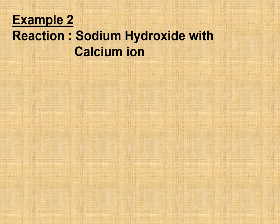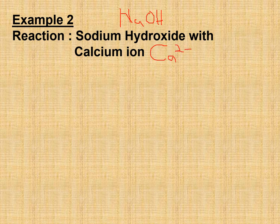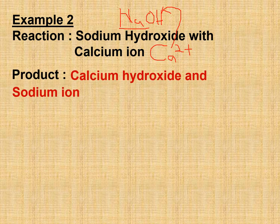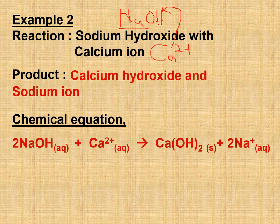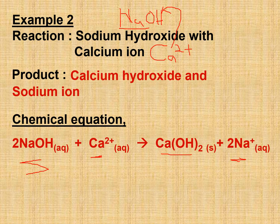Another example: sodium hydroxide with calcium ion (Ca²⁺). The product is calcium hydroxide and sodium ion. Equation: 2NaOH + Ca²⁺ → Ca(OH)₂ + 2Na⁺. That completes the three chemical properties of alkali. Please remember and practise all three chemical properties of acid and three chemical properties of alkali. End of Part 5 — thank you.